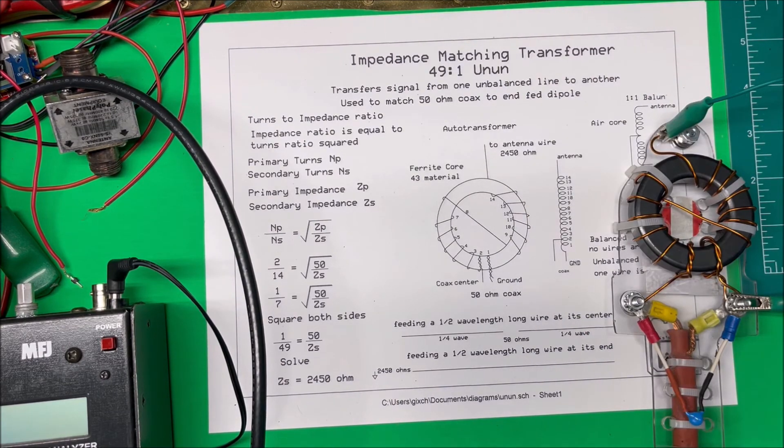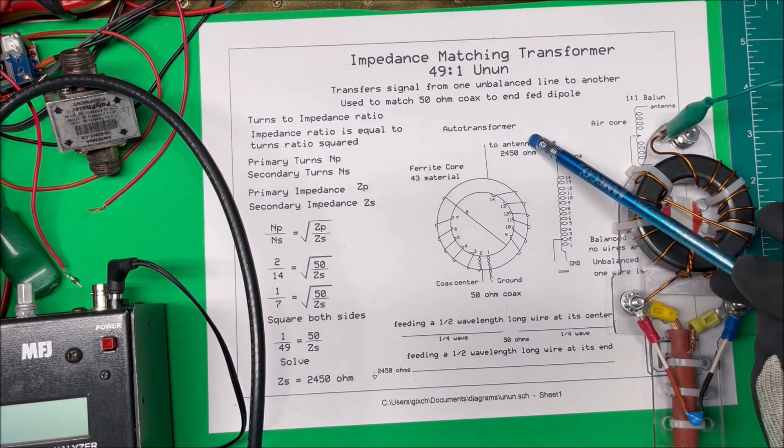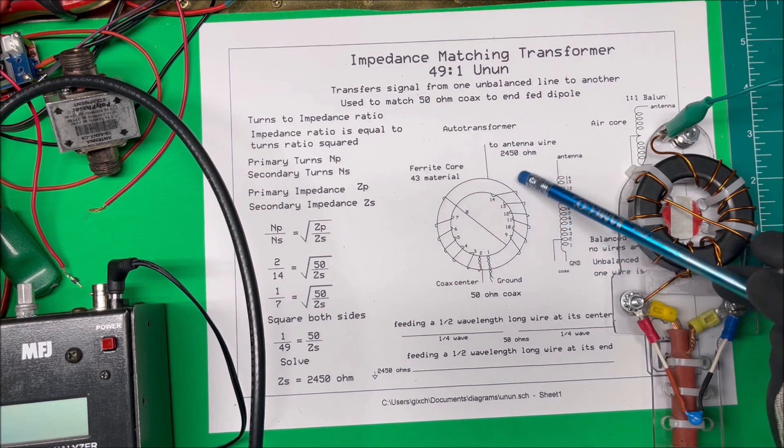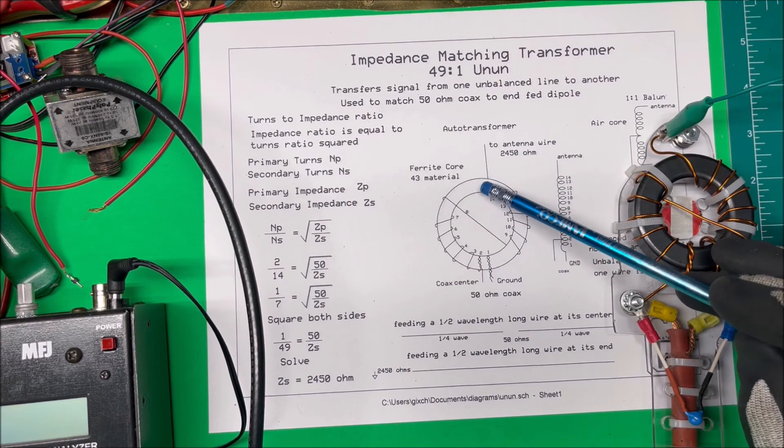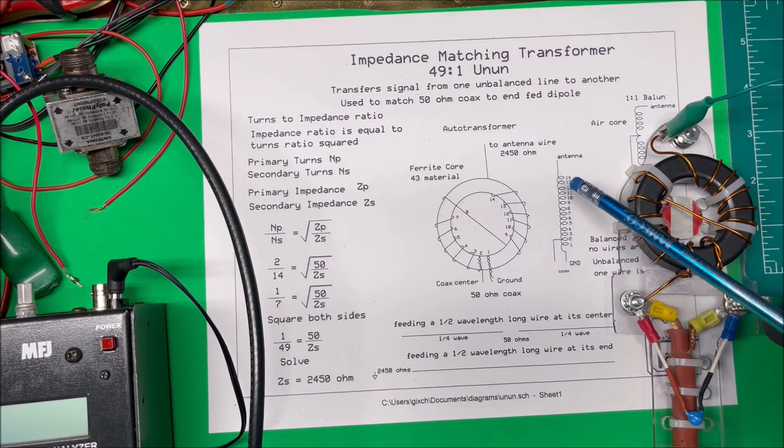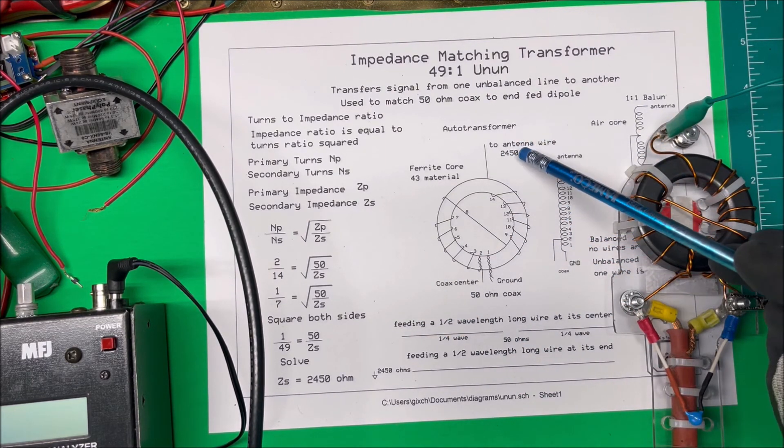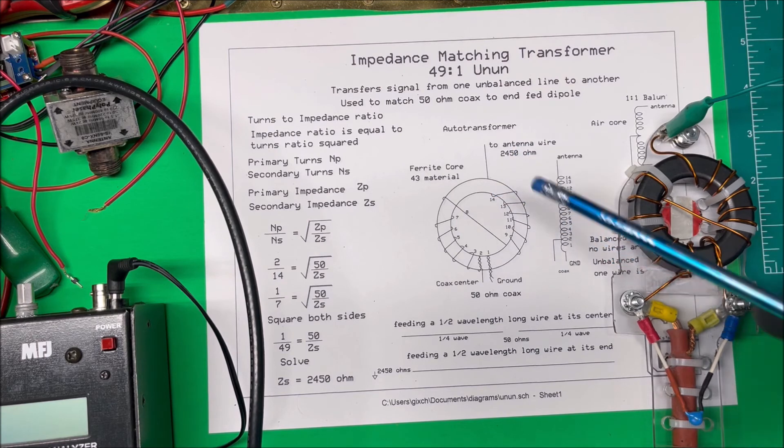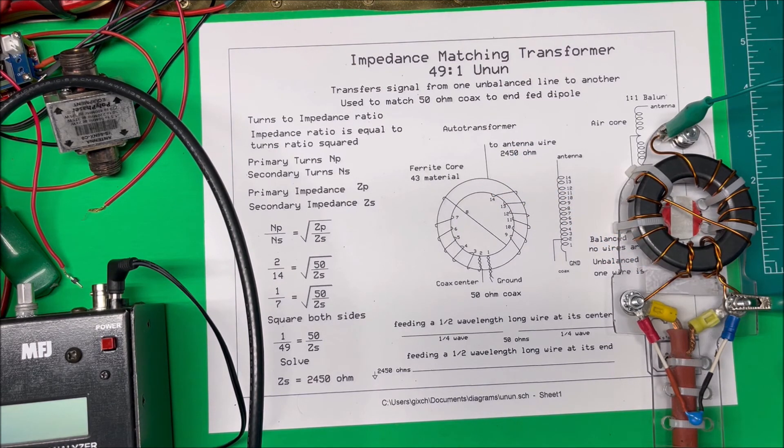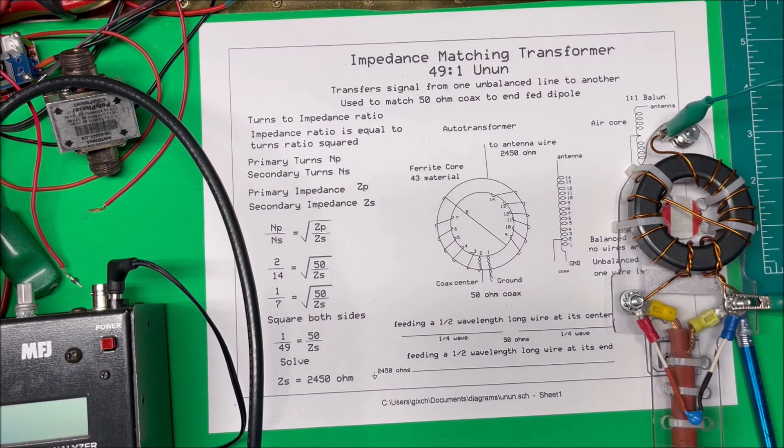Now if you wanted to increase this impedance here we can actually add a couple more wraps to this, one or two more wraps, and then you could calculate that this impedance, if the end of the wire is going to be higher impedance, you can compensate for that. Anyway that's a 49 to 1 unun right there, and thank you.